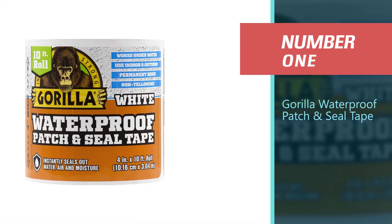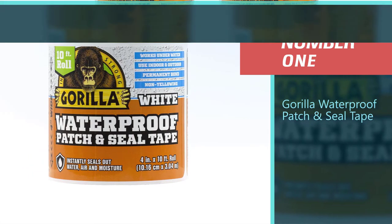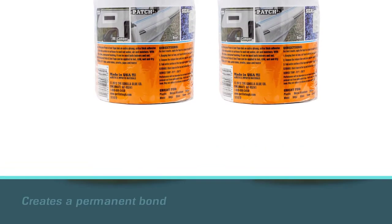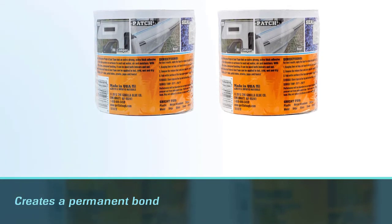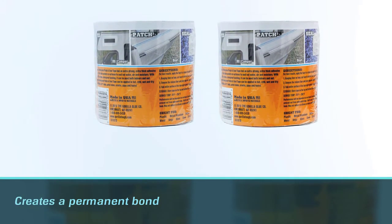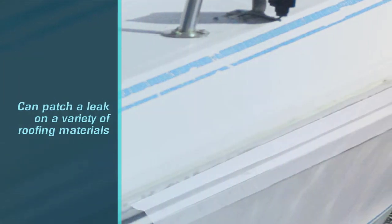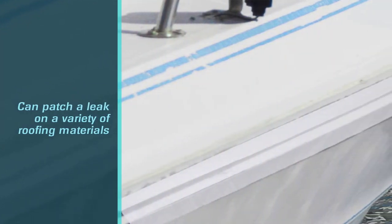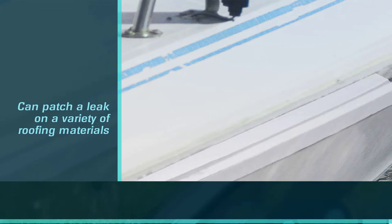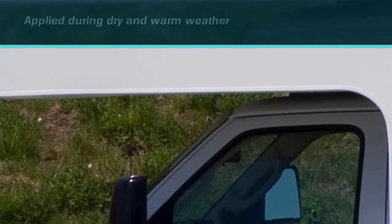Number one, most popular: Gorilla Waterproof Patch and Seal Tape. For those who need to repair only a small section of roofing and don't want to purchase an entire container of liquid sealant, Gorilla's 10-foot roll of seal tape might be just what the DIYer needs. It creates a permanent bond that can patch a leak on a variety of roofing materials including metal, rubber, plastic, and acrylic.